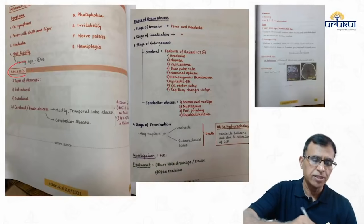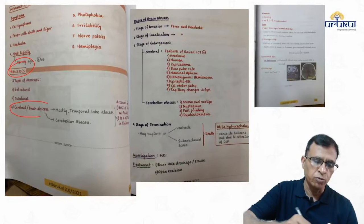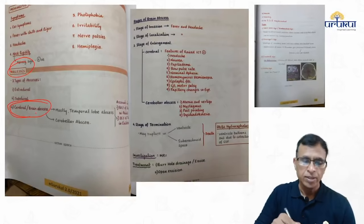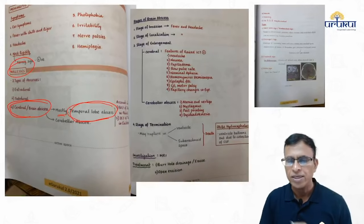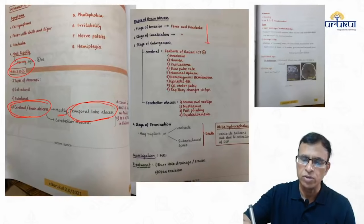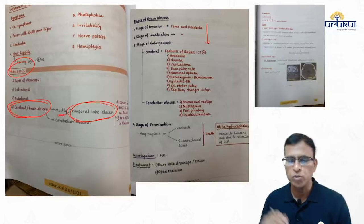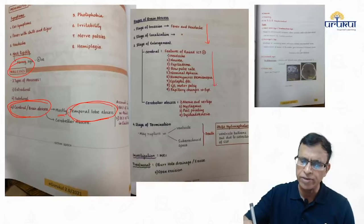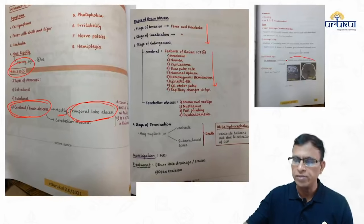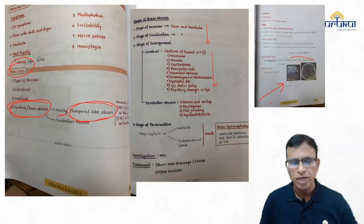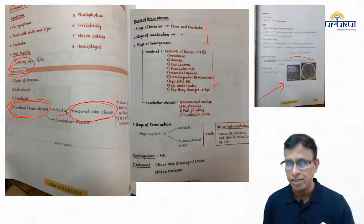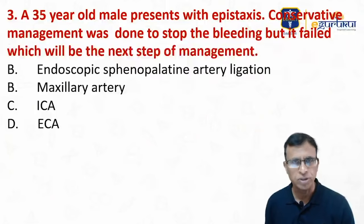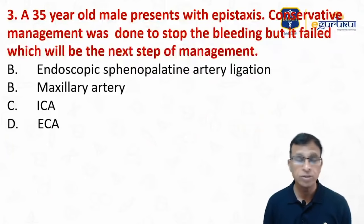The reference in the eGrukul app clearly states temporal lobe abscess and gives the sequence of events in its formation, the features of the patient, and images — so everything is covered. It was a simple question otherwise also.